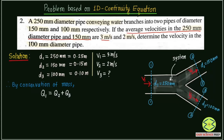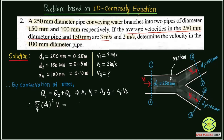Whatever fluid enters across section 1 — discharge Q1 — must equal Q2 plus Q3. This is a very important understanding. Since discharge equals area times velocity, we write: A1·V1 = A2·V2 + A3·V3. Substituting the area expressions, we get: (π/4)·D1²·V1 = (π/4)·D2²·V2 + (π/4)·D3²·V3.